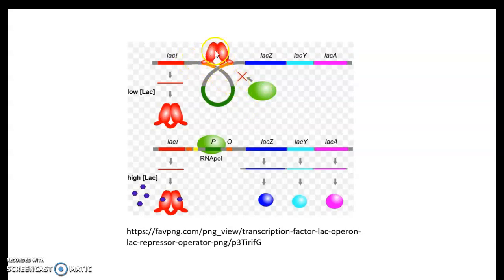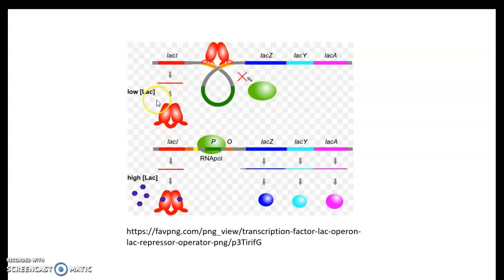The repressor protein is synthesized by a gene called lacI, which has its own promoter called lacPI. This promoter enables RNA polymerase to bind and transcribe lacI. The lacI gene, in the form of a tetrameric protein, is able to bind to the operator region in the absence of, or at low concentrations of, lactose.